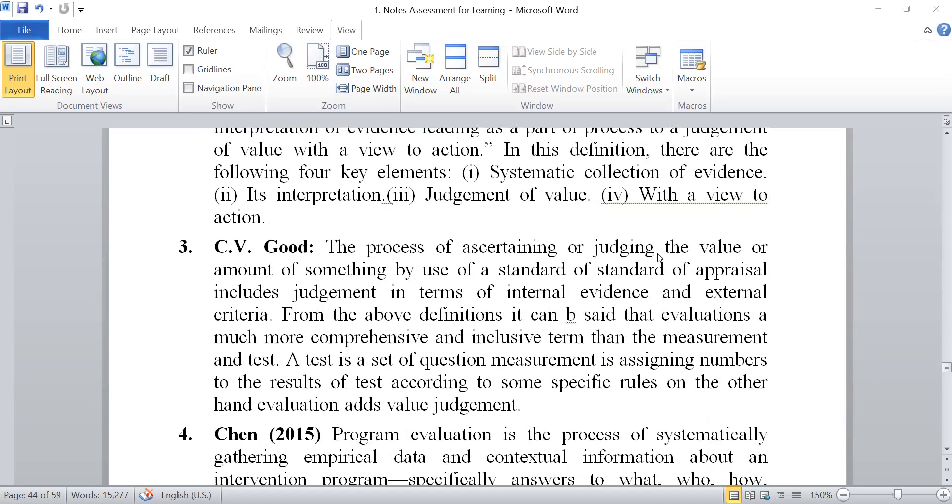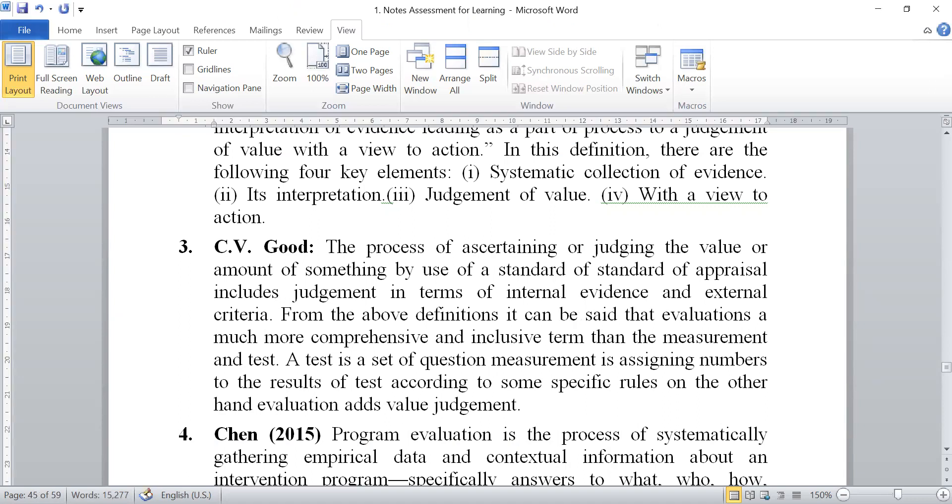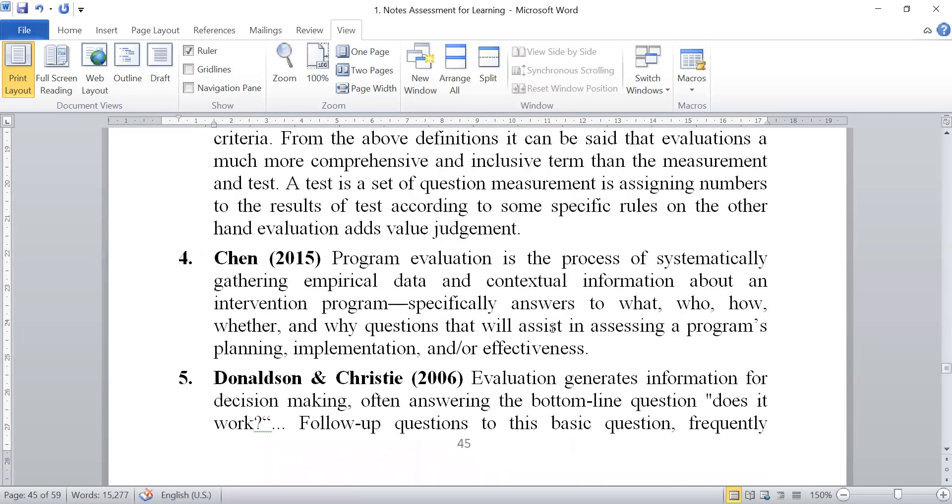Now next definition is C.B. Good. The process of assessing, training or judging the value or amount of something by use of a standard of appraisal. It imputes judgment in terms of internal evidence and external criteria. From the above definition, it can be said that evaluation is a much more comprehensive and inclusive term than the measurement and test. A test is a set of questions. Measurement is assigning numbers to the results of tests according to some specific rules. The process of assessment and evaluation is the process of systematically gathering empirical data and contextual information about an intervention program, especially answer to what, who, how, whether and why.